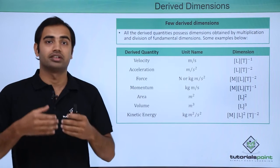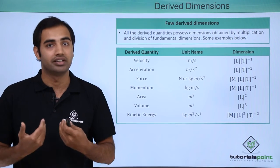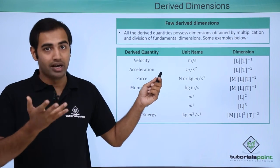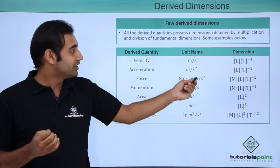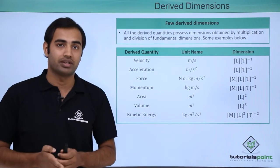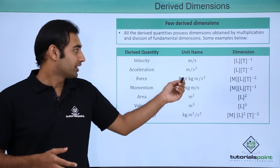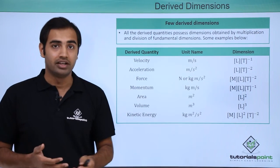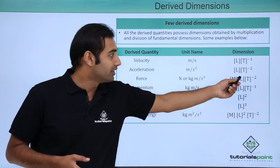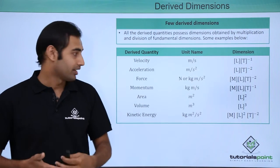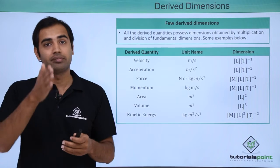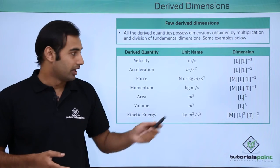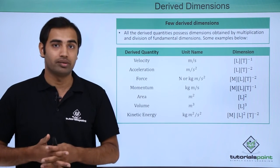Next, force. The SI unit of force is Newton, but it is derived from mass into acceleration, which is Kg times meter per second squared. Kg is mass and meter per second squared is acceleration. Putting in dimensions: Kg is represented by M, meter by L, and second by T. So the dimension of force comes out to be MLT raised to the power minus 2. Next, momentum is defined by mass into velocity, so its unit is simply Kg meter per second, and the dimension is simply MLT raised to the power minus 1.